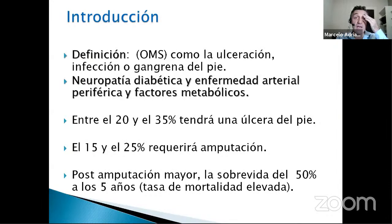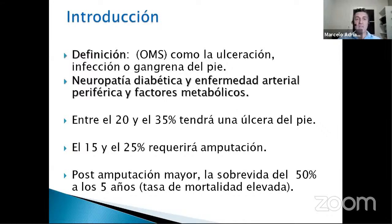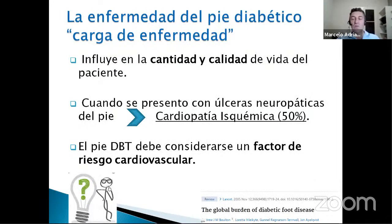Lo primero que debemos decir es que la OMS define al pie diabético como la ulceración, la infección o la gangrena del pie. Los tres protagonistas de esta problemática son la neuropatía, la enfermedad vascular periférica y los factores metabólicos. En la vida de un diabético, el 20 al 35% va a tener una úlcera, del 15 al 25% requerirá una amputación, lo que condicionará su calidad y cantidad de vida. Tiene alta mortalidad, mucho más que algunos tumores, porque pos-amputación la sobrevida es del 50% a 5 años.